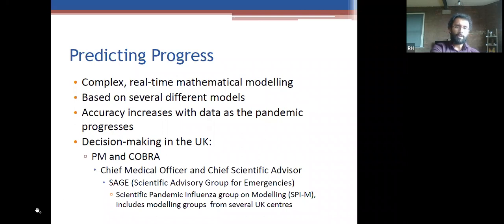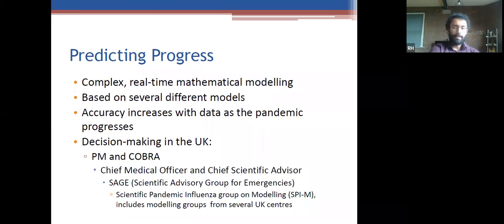How do we model the spread of disease? It's fairly complex — real-time mathematical modeling based on several different models, with several groups working simultaneously. Accuracy increases with data as the pandemic progresses. In the UK, decisions are made via the CMO, then SAGE, then the group called SPI-M, which does all the modeling and includes epidemiologists from various centers.